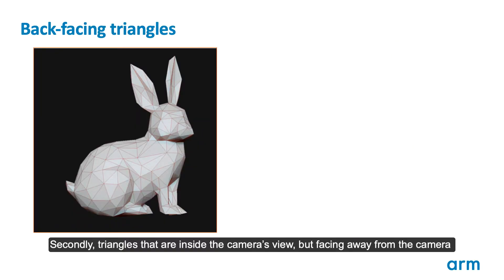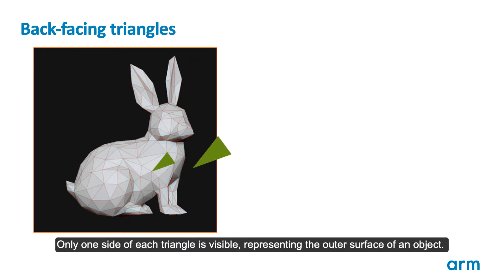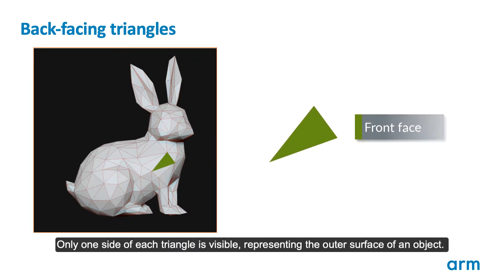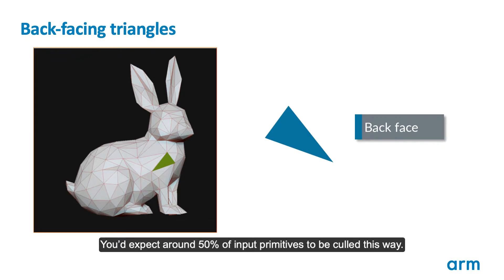Secondly, triangles that are inside the camera's view but facing away from the camera are known as back-facing triangles. These can also be discarded. Only one side of each triangle is visible, representing the outer surface of an object — the other side is almost always invisible because it's inside the object being rendered. You'd expect around 50% of input primitives to be culled this way.